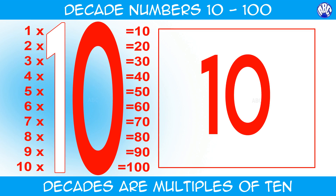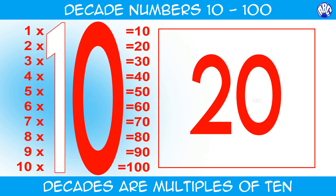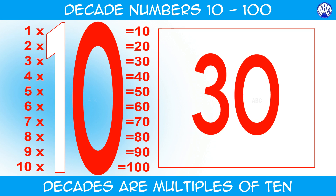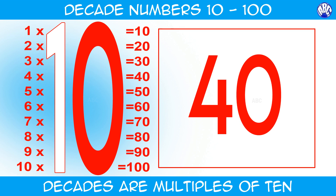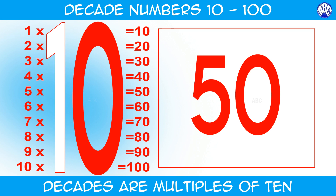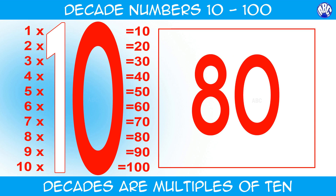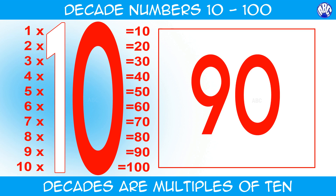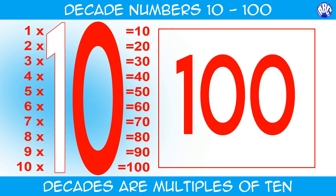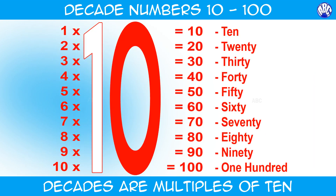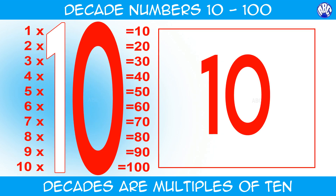1 ten equals 10. 2 tens equals 20. 3 tens equals 30. 4 tens equals 40. 5 tens equals 50. 6 tens equals 60. 7 tens equals 70. 8 tens equals 80. 9 tens equals 90. 10 tens equals 100. Let's do it once again, this time with numbers alone.